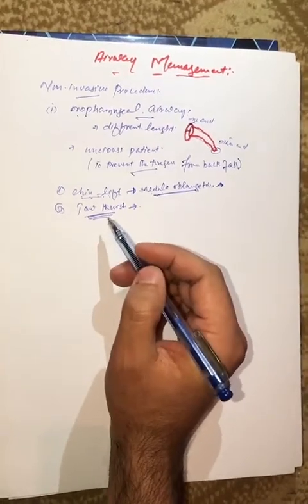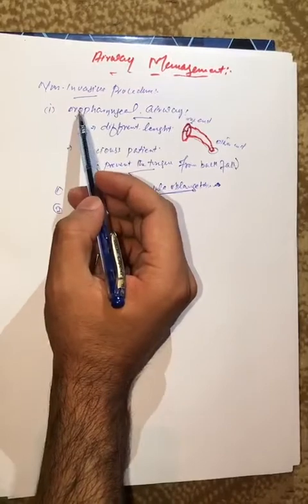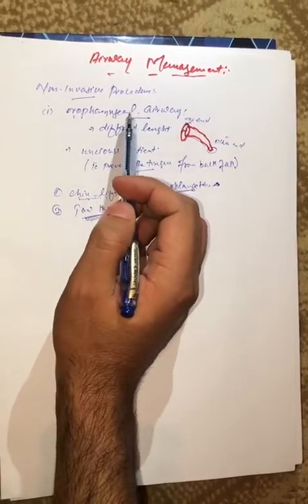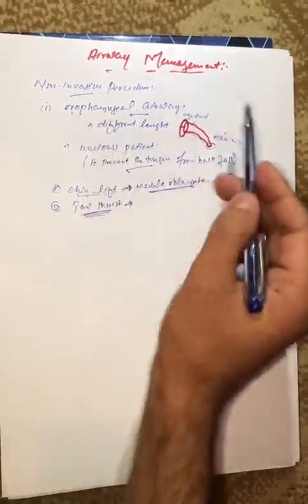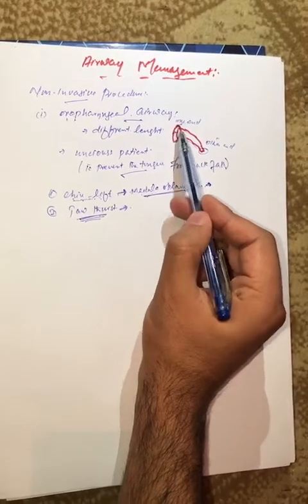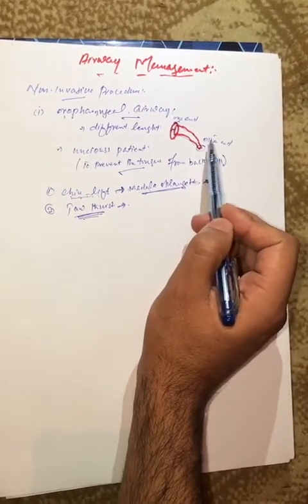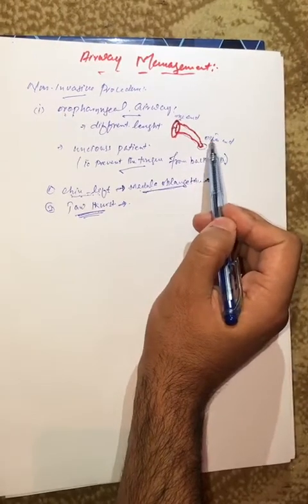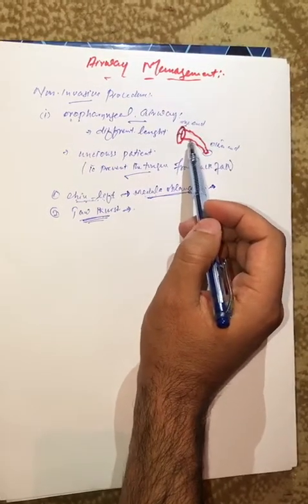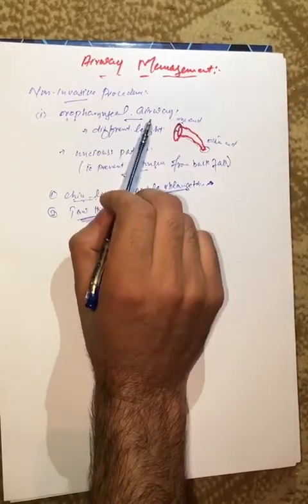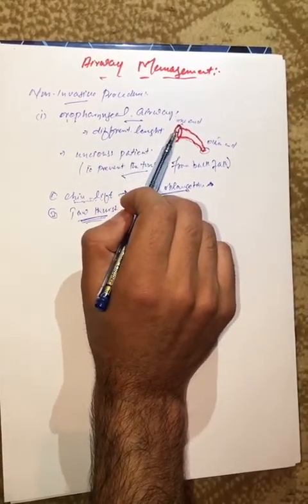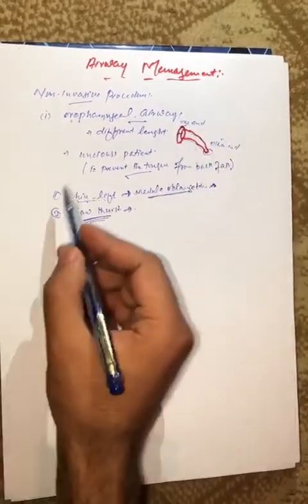Now our topic is non-invasive procedures. The first one is oropharyngeal airway management. In oropharyngeal airway management, we insert a tube inside the patient. One end is outside the buccal cavity at the midpoint of the incisor teeth, and the other end is inside the mouth resting on the pharynx. The advantage is to maintain the airway of the patient. Always remember that oropharyngeal airway management is done in an unconscious patient, just to prevent tongue fall.